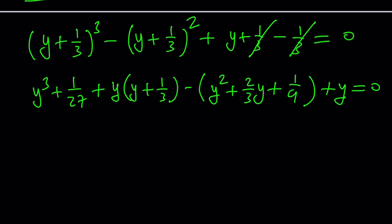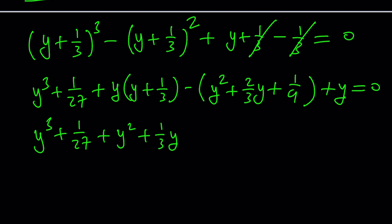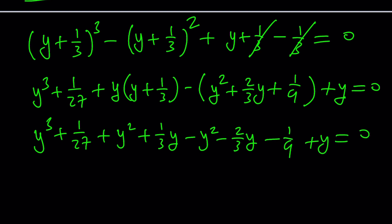Let's go ahead and distribute and simplify this even more: y cubed plus one over 27 plus y squared plus one third of y minus y squared minus two thirds of y minus one ninth plus y equals zero. Notice that y squared cancels out — that was the whole goal, to get rid of y squared.